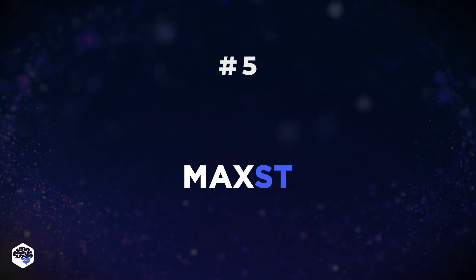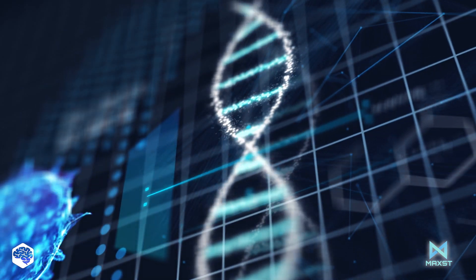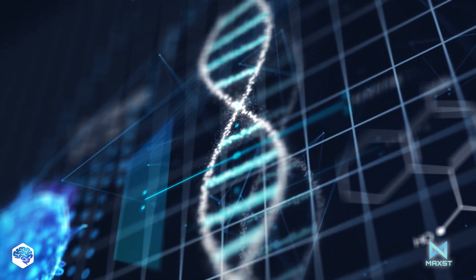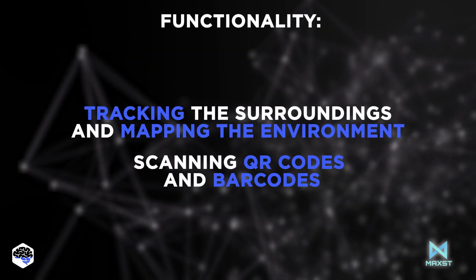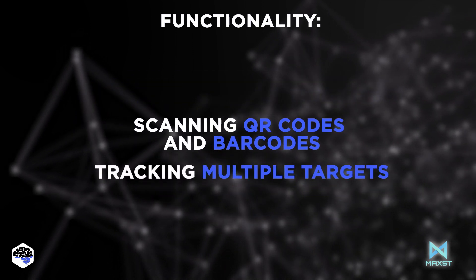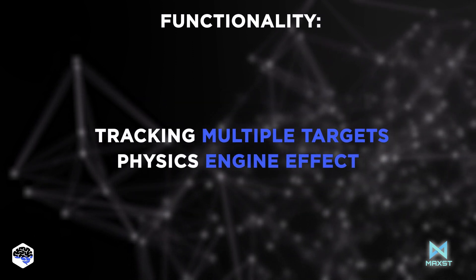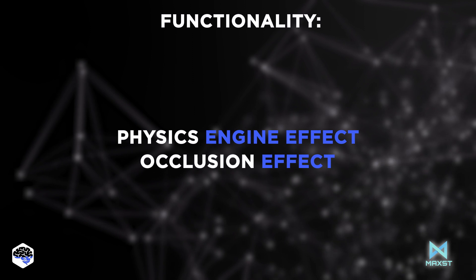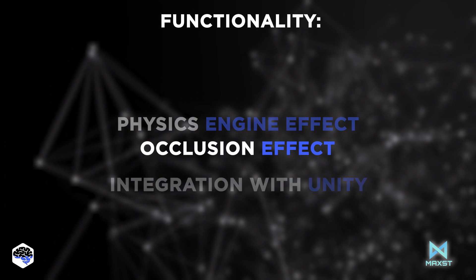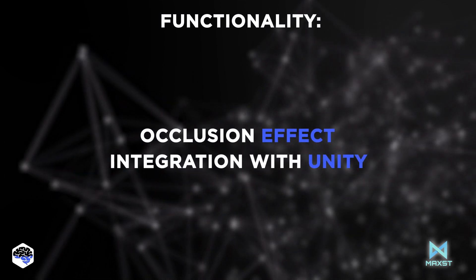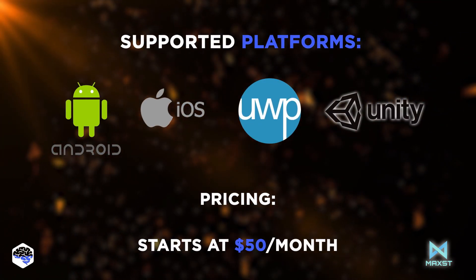MaxST. MaxST AR SDK is yet another powerful framework for mobile software developers that increasingly grows in popularity. Its key features include tracking the surroundings and mapping the environment, scanning QR codes and barcodes, tracking multiple targets at the same time — up to 3 items — a Physics Engine Effect to create more realistic experiences, an Occlusion Effect for screening the virtual object by a real one fully or partially, and integration with Unity. Note that MaxST only works with a 32-bit Unity editor version. Pricing is tier-based, starting at $50 per month.